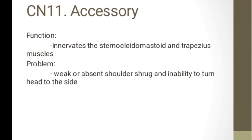Cranial nerve 11 is the accessory nerve. Its function is to innervate the sternocleidomastoid and trapezius muscles. Problems include weakness or absent shoulder shrug and inability to turn the head to the side. If the nurse assesses a patient with an absent shoulder shrug, the affected cranial nerve is the accessory nerve.